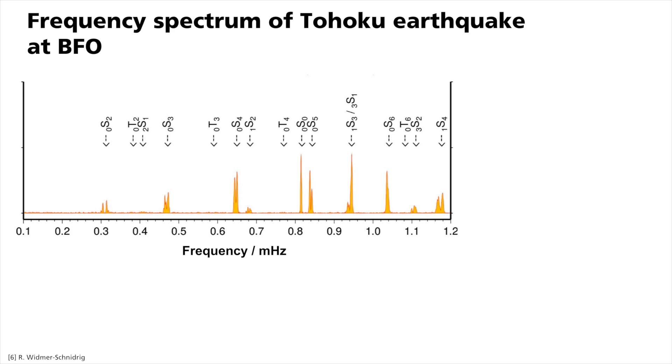First of all, note the x-axis in this frequency spectrum. It indicates values in the sub-millihertz range. The 0S2 mode has the smallest eigenfrequency, 0.3 millihertz, which corresponds to an oscillation period of approximately 54 minutes. Even surface waves with extremely long periods only reach periods of a few hundred seconds.